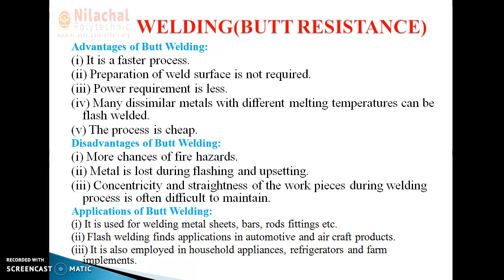Number four, many dissimilar metals with different melting temperatures can be butt welded. That means we can easily join dissimilar metals with different melting temperatures, which is not feasible in other welding processes. And the last advantage is that the process is cheap.